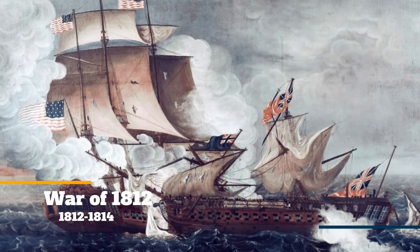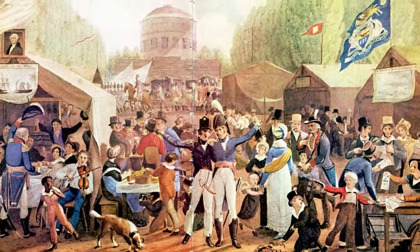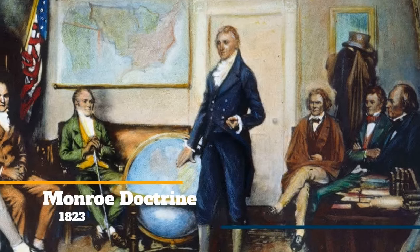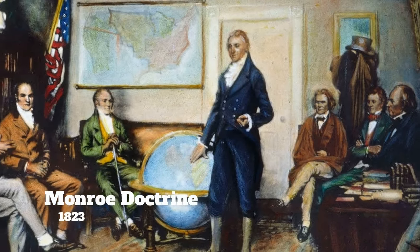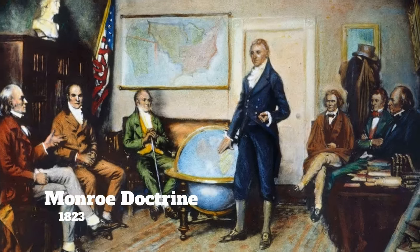This idea that America was somehow special had been building since the end of the War of 1812. Following the War of 1812, Americans felt a growing pride in their country, which was represented in the era of good feelings and the beginnings of a national identity. In some ways, the Monroe Doctrine was a preview of manifest destiny because it was a nationalistic policy that claimed America as the protectors of the Western Hemisphere. Manifest destiny went a step further by claiming that America was destined to take over large parts of the Western Hemisphere.